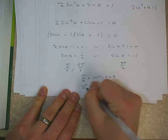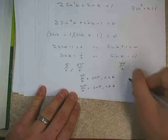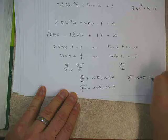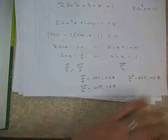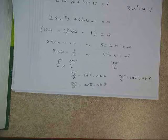But if we need to generalize it, we would say pi over 6 plus 2n pi, where n is an integer, 5 pi over 6 plus 2n pi, where n is an integer, and also 3 pi over 2 plus 2n pi, where n is an integer.